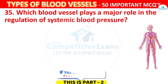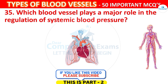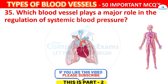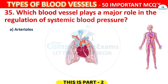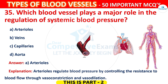Question 35. Which blood vessel plays a major role in the regulation of systemic blood pressure? The options are: Arterioles, Veins, Capillaries, or Aorta. The correct answer is A, that is Arterioles. Arterioles regulate blood pressure by controlling resistance to blood flow through vasoconstriction and vasodilation.